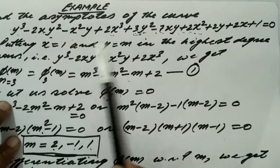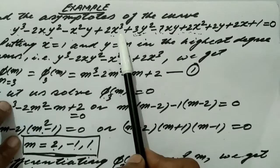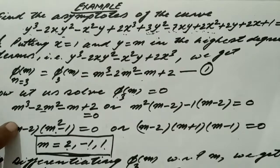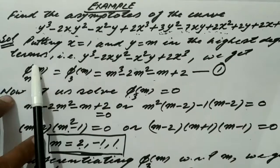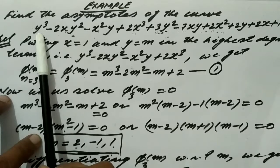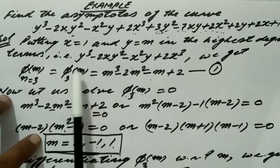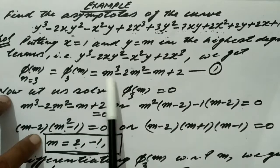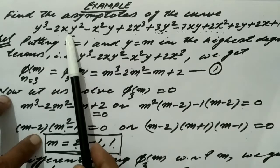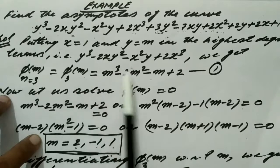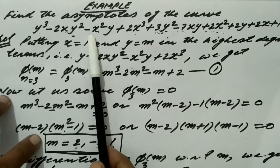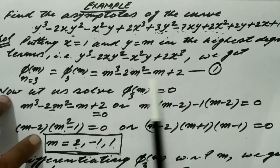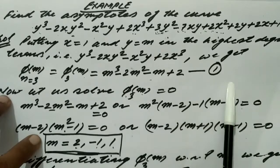According to the algorithm, in Step 1 we substitute x = 1 and y = m in the highest degree terms. Doing so gives φ₃(m) = m³ − 2m² − m + 2.